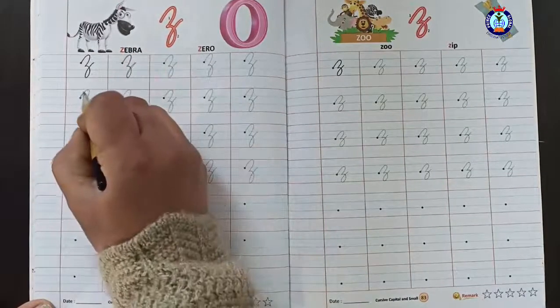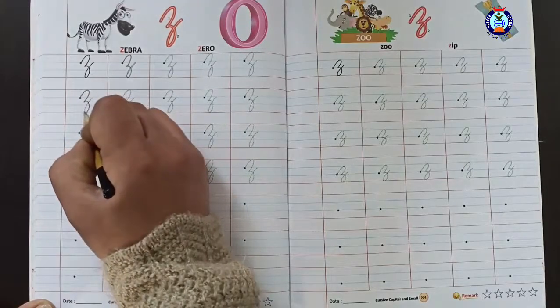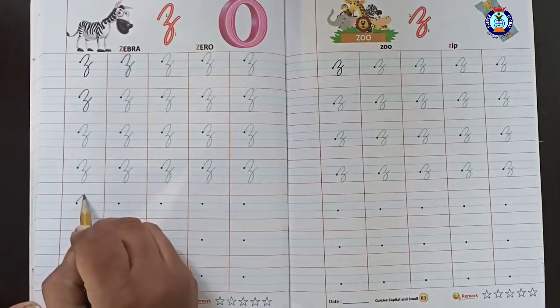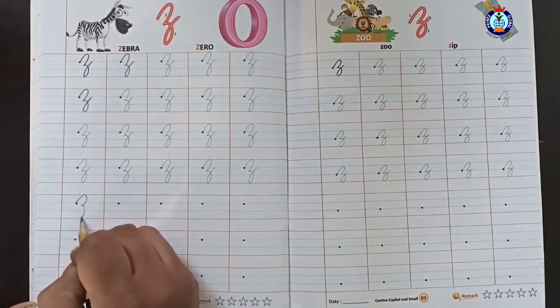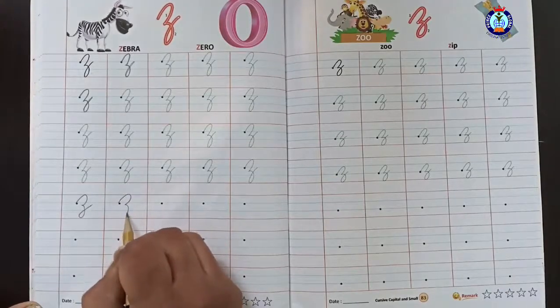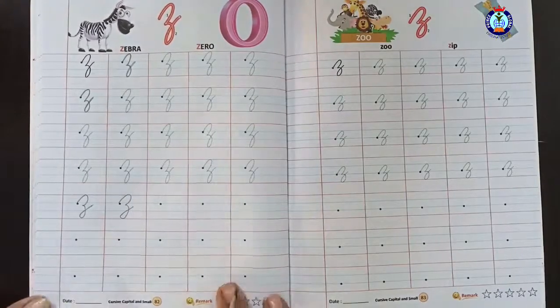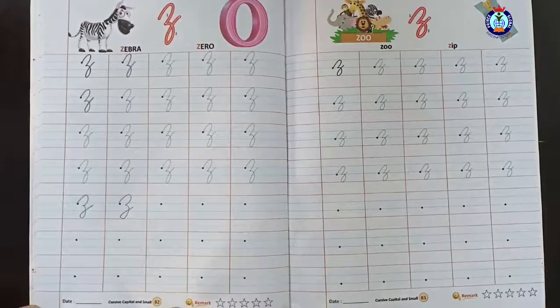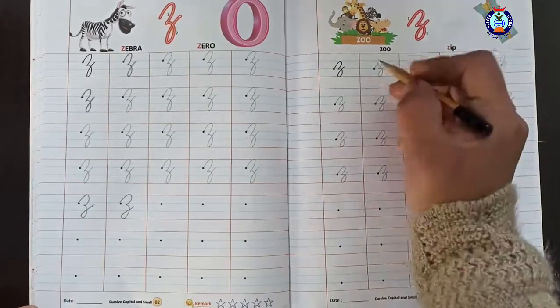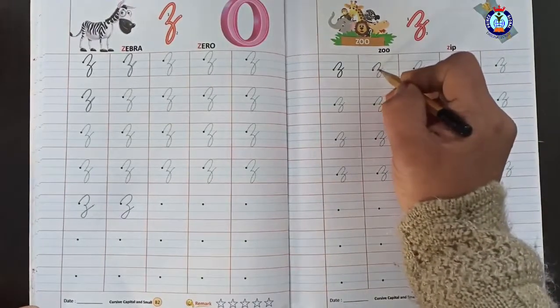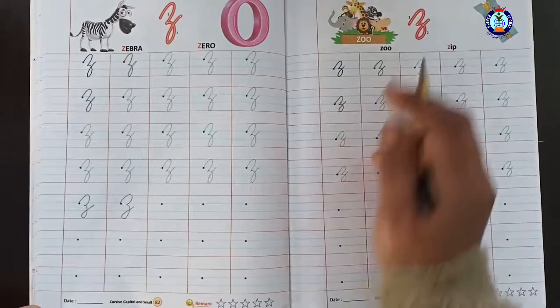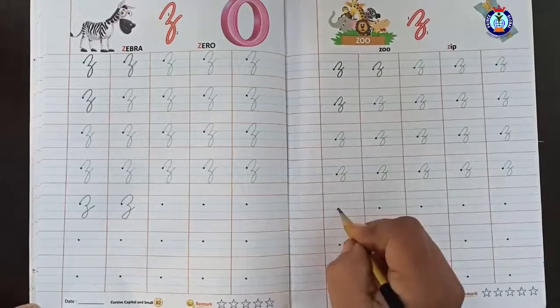We will create the letter, dot dot join and fill in the three lines in the box. We will create the letter in letter Z. This letter dot join, write down here, you can see.